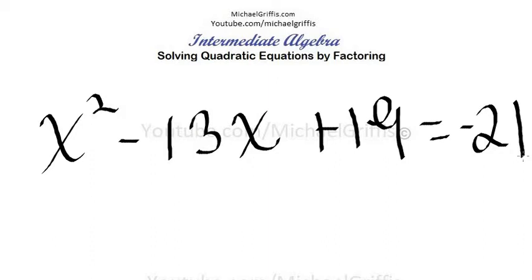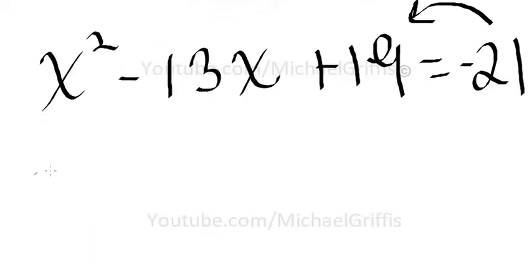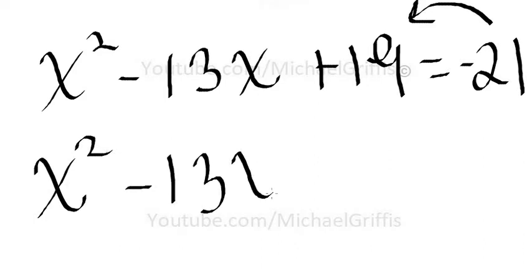First thing I'm going to do is get this into standard form. That means we need to take this 21 over to the left, so we're going to have x squared minus 13x plus 19, adding 21 to both sides.